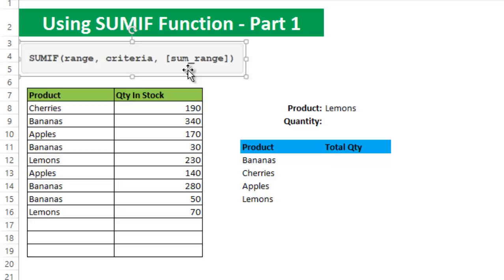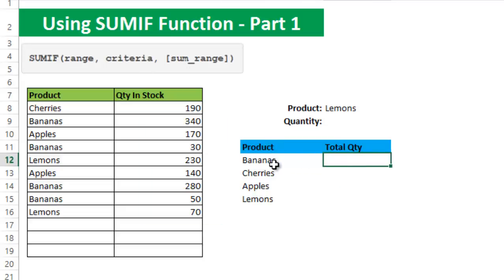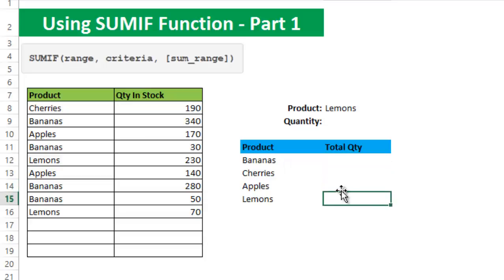If the sum range argument is omitted, Excel will sum the same cells to which the criteria is applied. So here we have a table and we want to know the total quantity of each product: bananas, cherries, apples, and lemons.